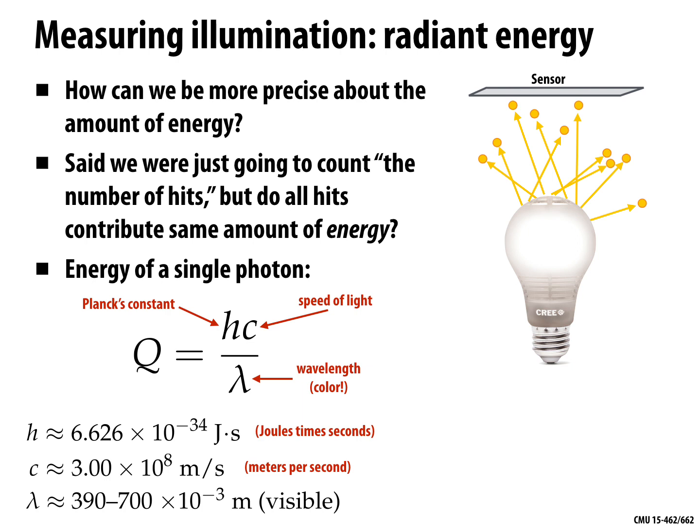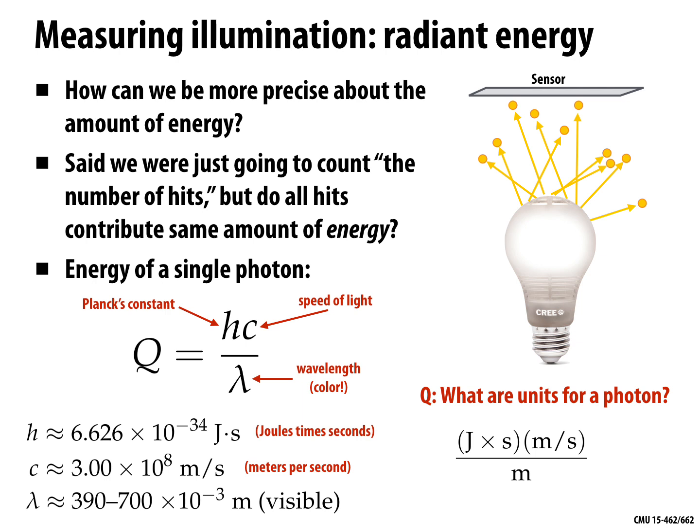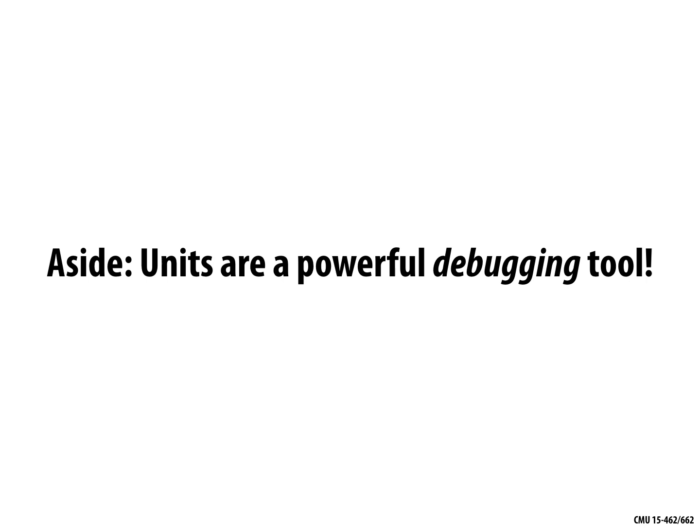With Planck's constant in joules·seconds, speed of light in meters per second, and wavelength in meters, the energy of a photon comes out in joules — which is correct, since energy is measured in joules. Units are a really powerful tool for debugging rendering code. If you're multiplying and dividing variables to compute a color quantity, tracking units tells you whether you're getting what you expect — are you getting energy in joules, and so forth?